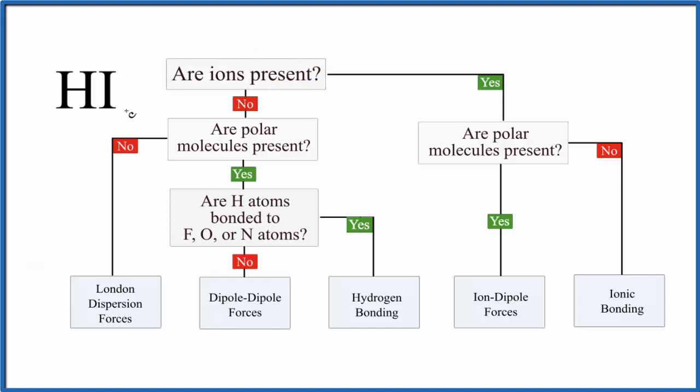So in this case, we have a covalent compound, two non-metals. So we're not going to have ions present. These electrons are shared between atoms. So no, we don't have any ions present.